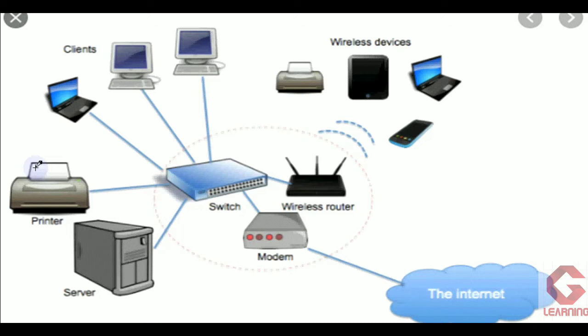A printer and one server are also connected to the switch, so all the computers in this complete network are able to access this printer as well as data from this server. Because of this complete computer network, internet sharing, software sharing, data sharing, and hardware sharing are all possible. These are all the benefits users get from this computer network.